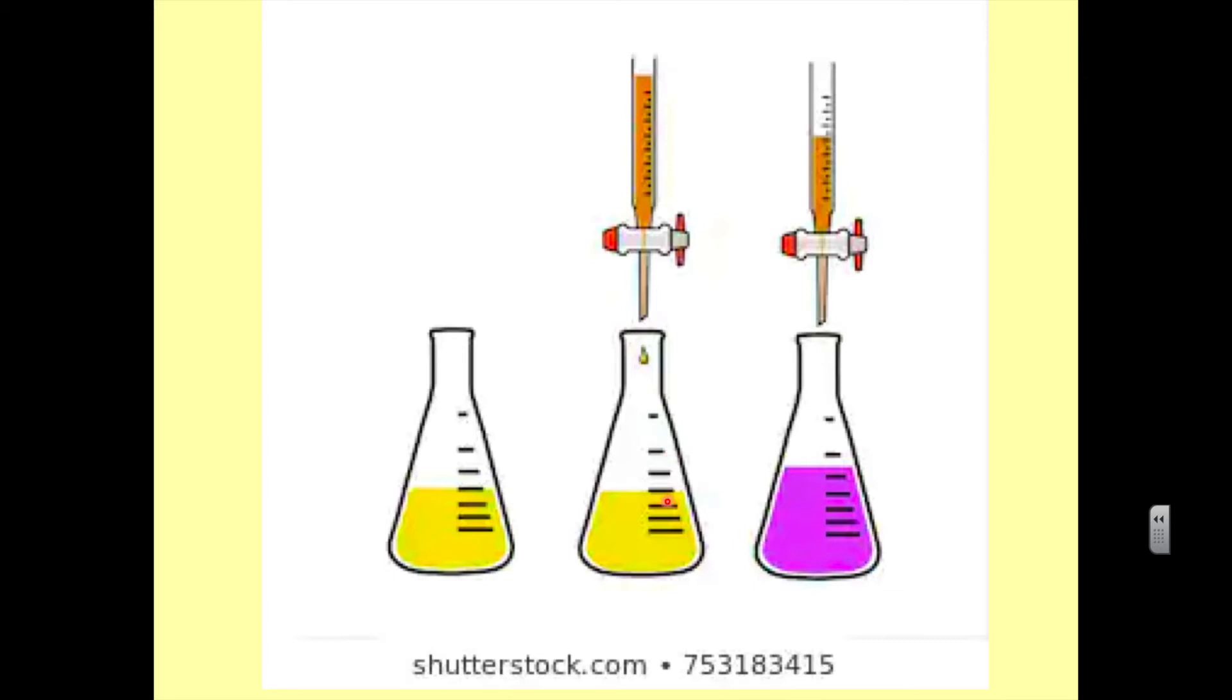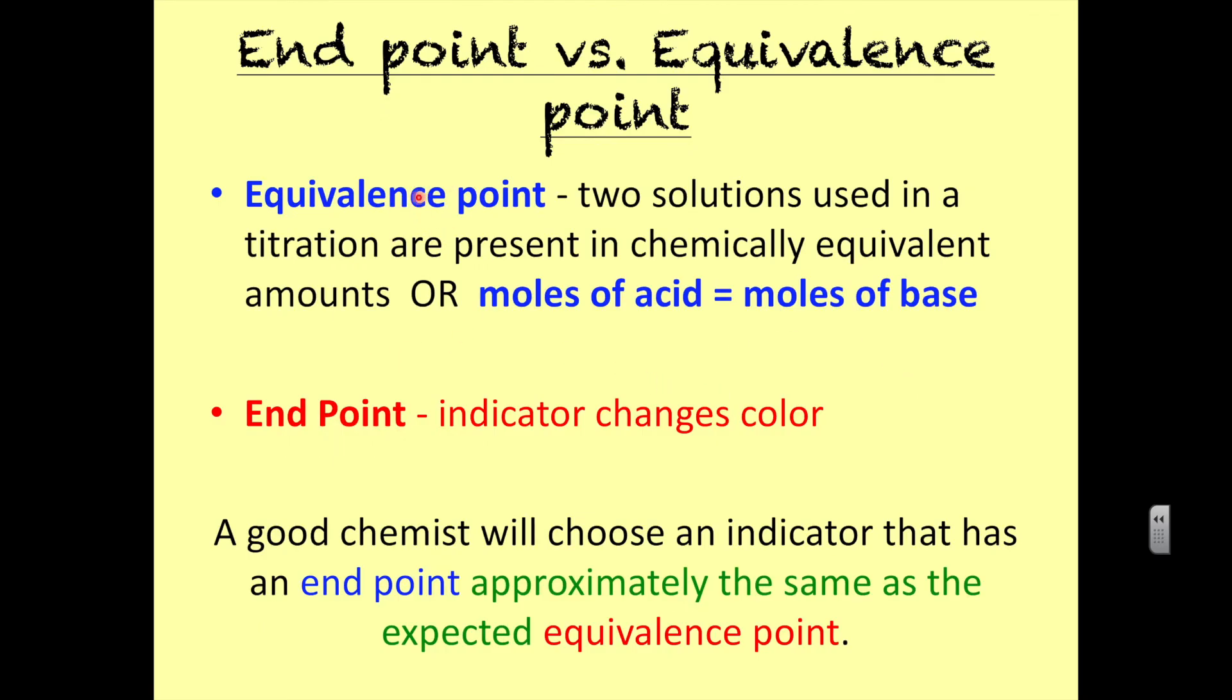We will note the volume and then add the titrant to our solution. The little drops will start to change the color of the analyte, but they should go away pretty quick. Then all of a sudden, the whole thing will just change color right away, and that is the point that we should stop. That is our final reading. Once we've done that, we take the difference between the initial volume and the final volume, and that is our total volume of titrant added.